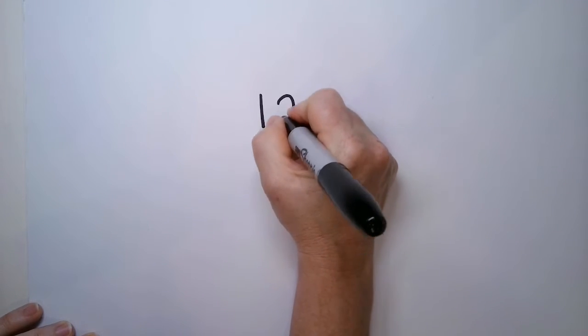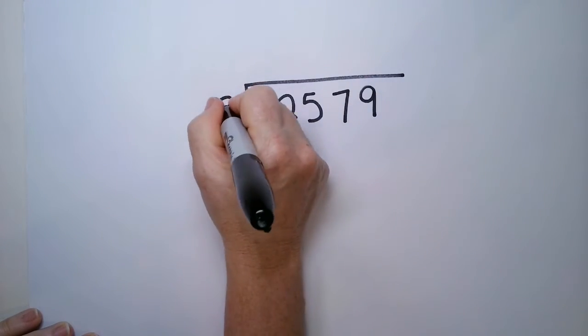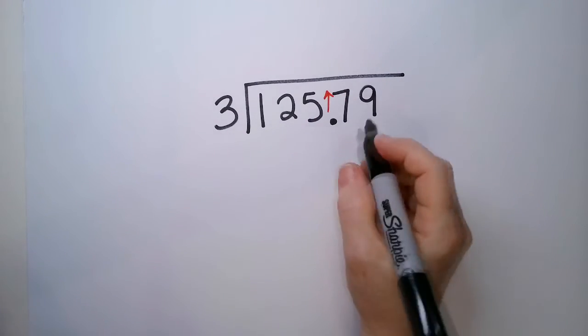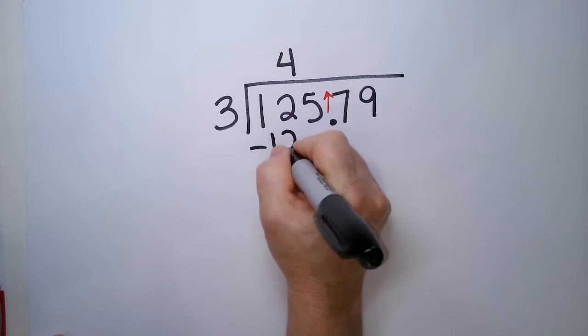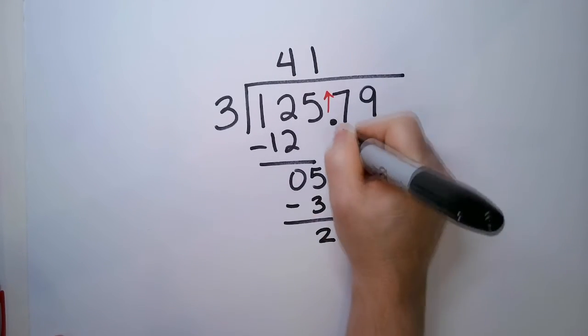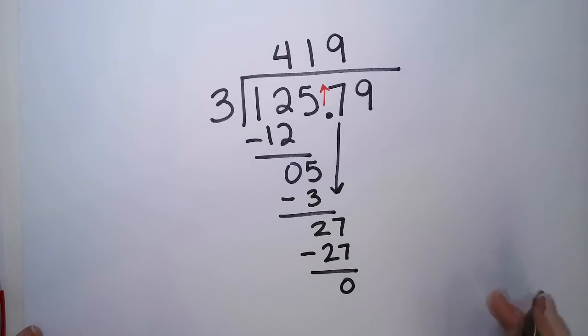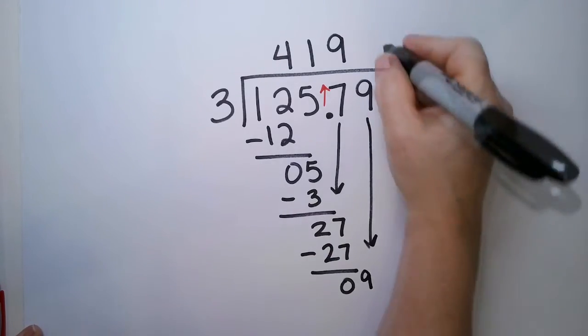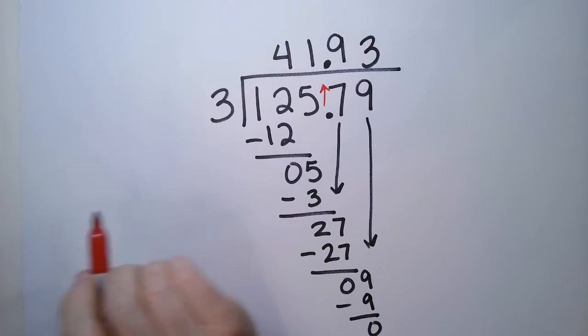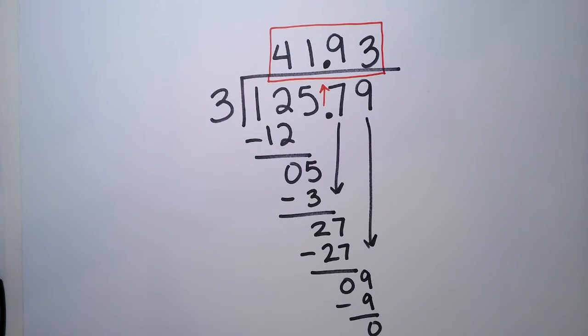So the most important thing to remember when doing division with decimal numbers is it's exactly the same as division with whole numbers. The only difference is you just push up that decimal point when you're doing your final result. So very quickly we have, this is 12 and 0. Drop the 5, 3 goes in one time, minus 3 is a 2. We're going to drop the 7, 3 goes into 27 nine times, minus 27 is 0. And we're going to drop the 9, 3 goes into 9, 3 times, and there is no left over. Push the decimal point up. 125 and 79 hundredths divided by 3 gives me 41 and 93 hundredths.